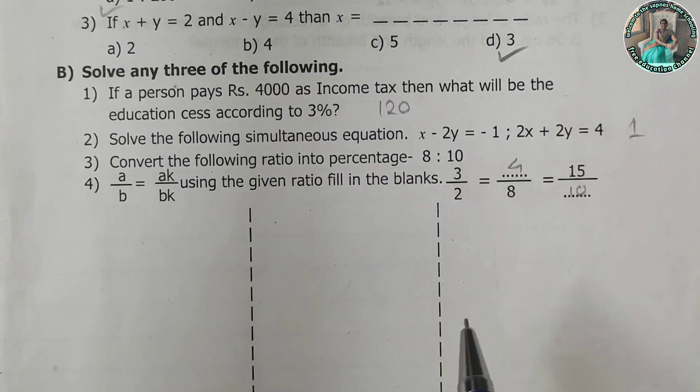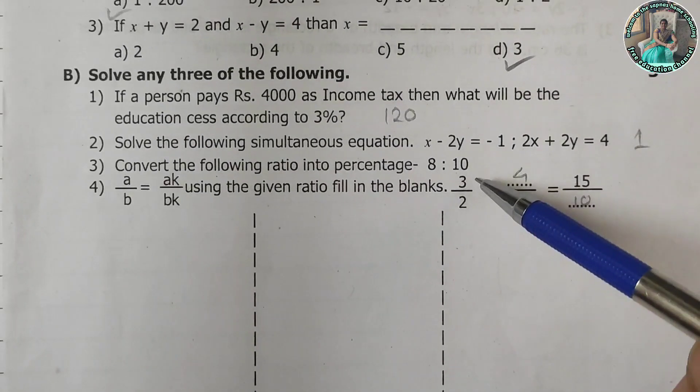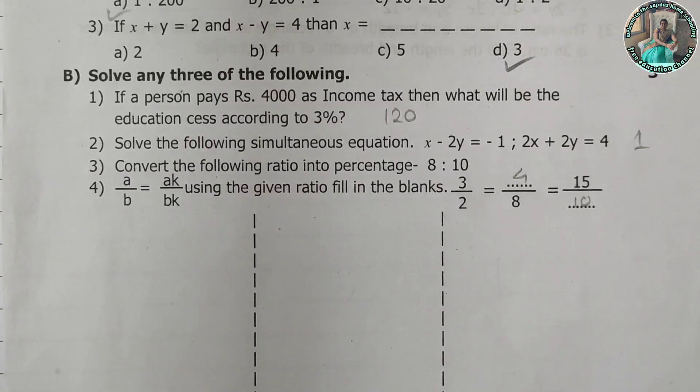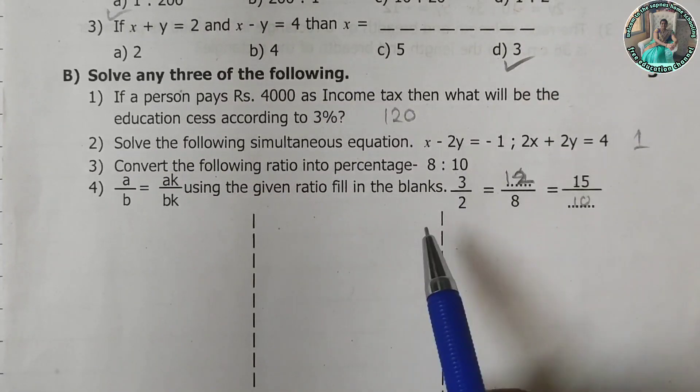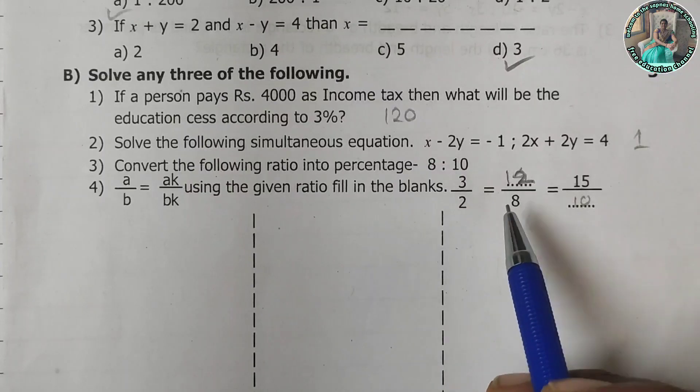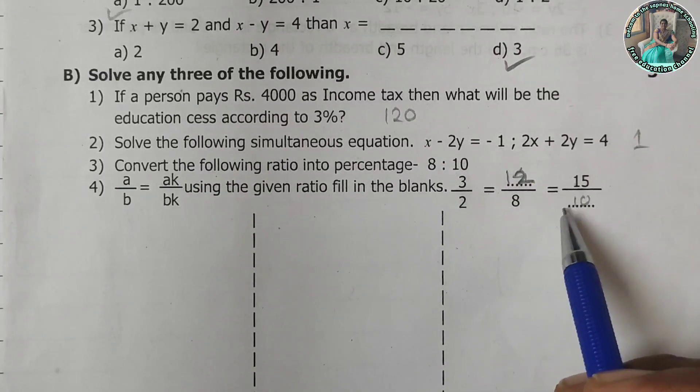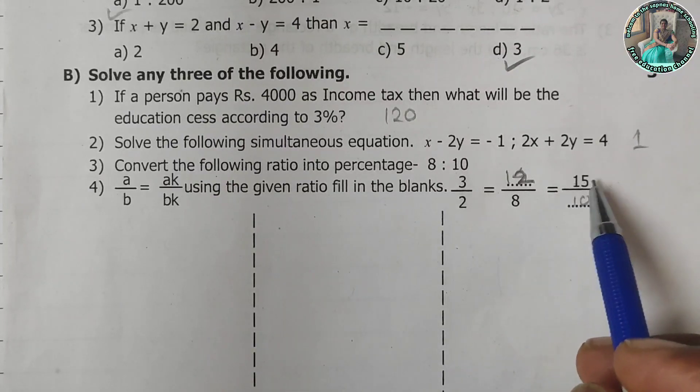So 3 upon 2 is equal to... So here, if it's 4, 4 into 2 is 8, then 4 into 3 is 12. So 5 into 2 is 10, and 5 into 3 is 15.